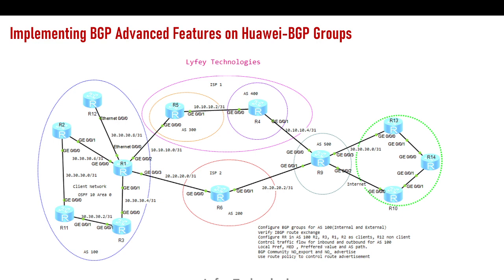Instead of doing repetitive configuration — specifying the connect interface, route reflection, or route policies for every individual router — you apply these commands at the group level. This reduces the configuration workload, and when troubleshooting it's also much easier because you have fewer commands in the device. Going through the configuration to identify an issue becomes straightforward. BGP groups are very common in service provider networks and even in some enterprise networks.